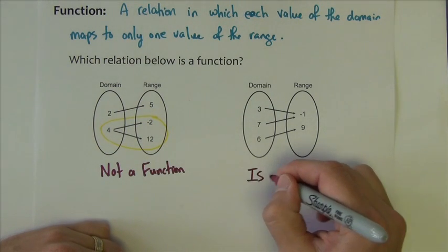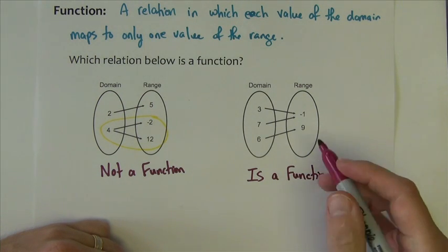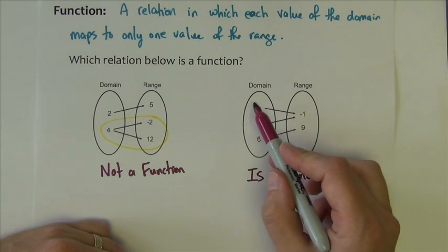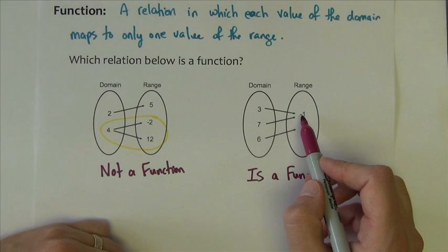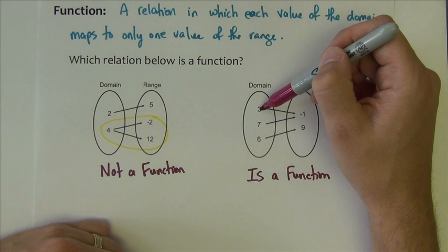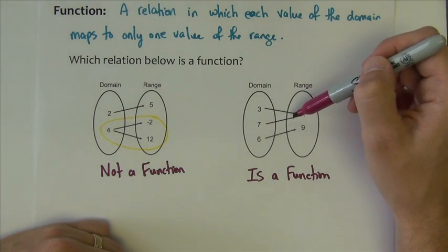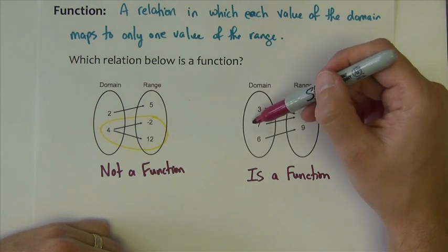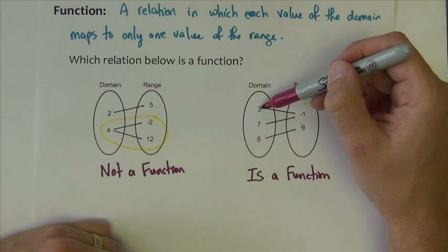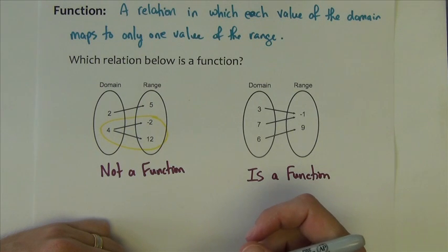This one over here is a function. Sometimes it's confusing because of this bit right up here. Students seem to think because these two point to the same y value that it's not a function. But it is because every one of these over here can only go to one of these. It doesn't matter that these two go to the same one. What matters is that these two numbers, the three and the seven, only go to one number themself. It doesn't matter that it's the same number.